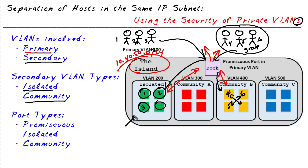In an isolated VLAN — and you're only going to have at most one — any ports participating in that isolated VLAN, in this case VLAN 200, will not be able to communicate with any other ports in the private VLAN, with the exception of a promiscuous port. Going back to our analogy, person one will not be able to talk to persons two, three, four, five, or six because they are in the isolated VLAN, effectively blocked from communicating with all other devices on that switch.